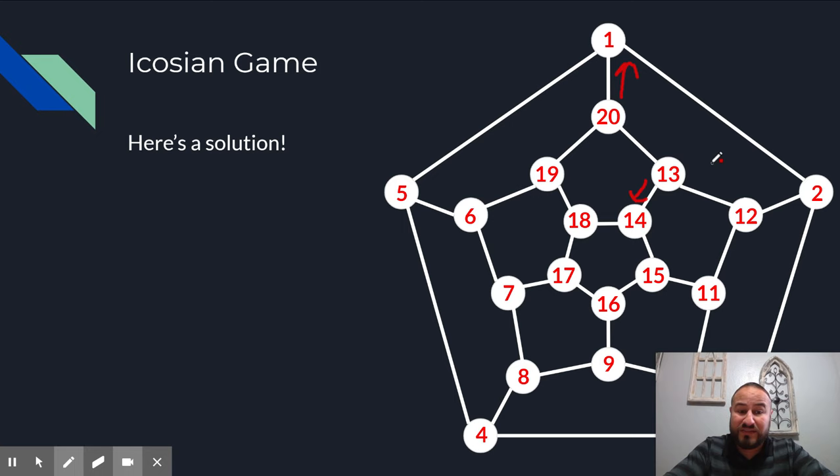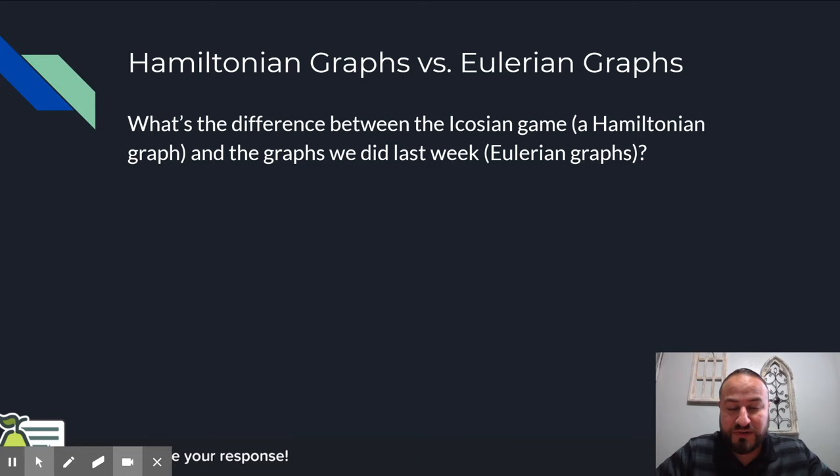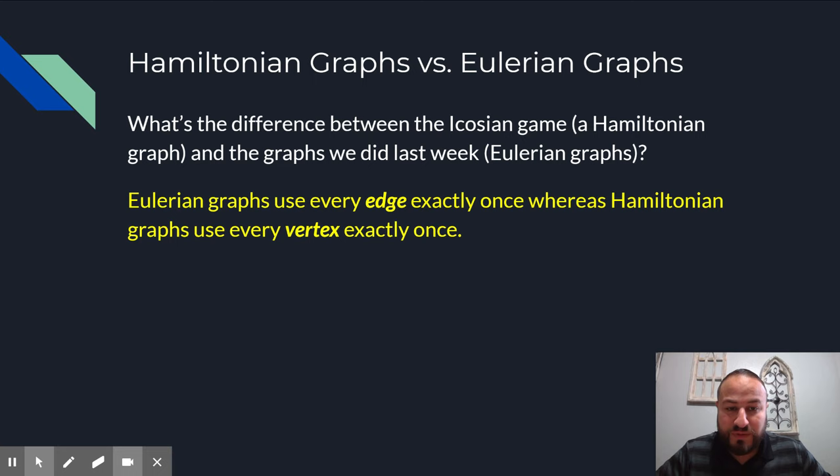And you know, what we've looked at in class was, hey, what's the difference between this game, what we just did and the graphs you did last week on your assignment, on your learning assignments. And the big difference here, obviously is that last week in the Eulerian graphs, we used every edge exactly one time. But this week, just now, right now on that Icosian game, we only use every vertex exactly once. And so there's a big difference. And the difference in that makes gives us a new type of graph. And this is called a Hamiltonian graph.